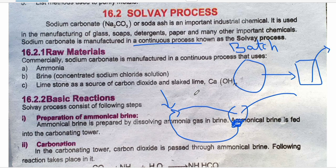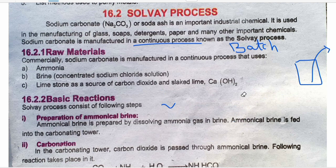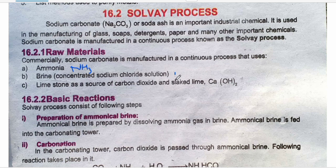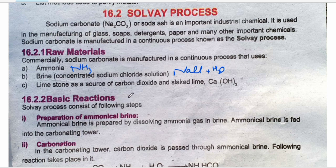Commercially, sodium carbonate is manufactured in a continuous process that uses the following raw materials. The first is ammonia, NH₃. The second is brine, which is a highly concentrated solution of sodium chloride, NaCl, dissolved in water. Third is limestone, used as a source of carbon dioxide and slaked lime. Slaked lime is calcium hydroxide, Ca(OH)₂.